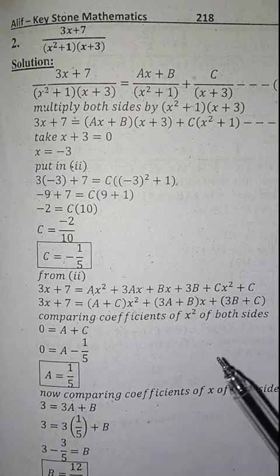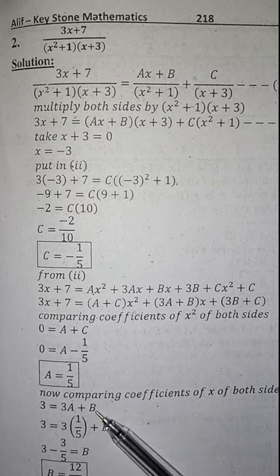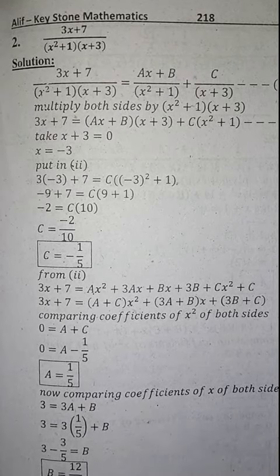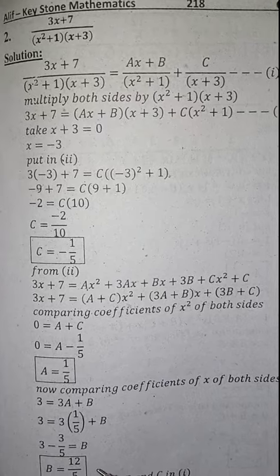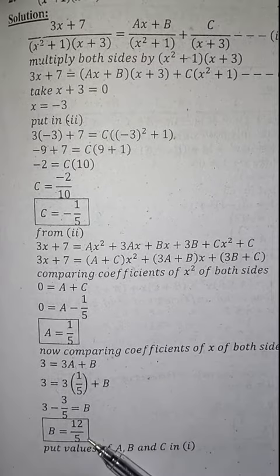Now comparing coefficients of x of both sides. We get 3 is equal to 3A plus B. And the value of A is 1 by 5. By solving we get value of B which is 12 by 5.